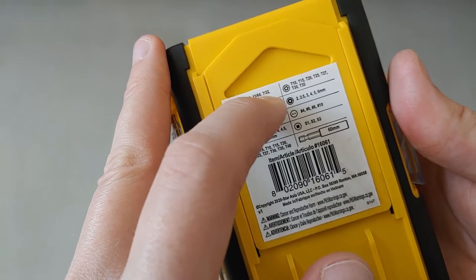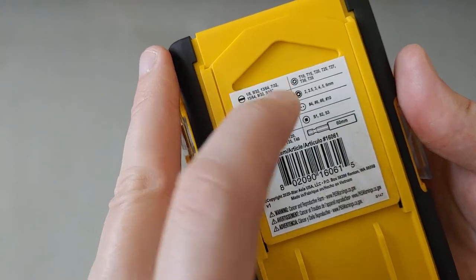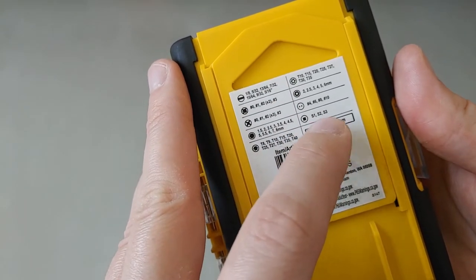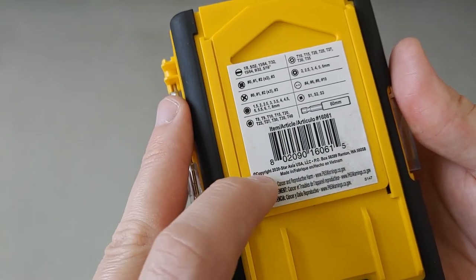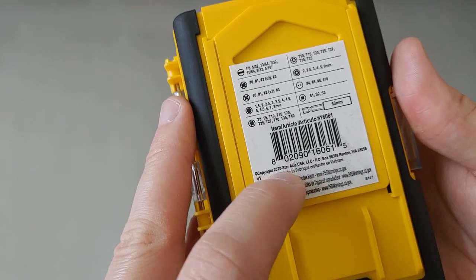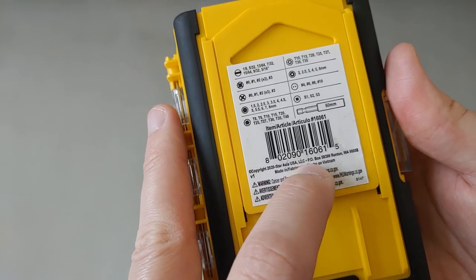It also comes with spanner bits, square bits, and a 60 millimeter quarter-inch bit holder. You'll also notice it has copyright 2020—this is a newer version—and these particular bits are made in Vietnam.